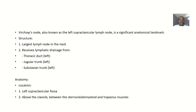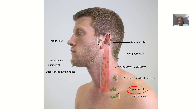Specifically, the left supraclavicular node is what we call the Virchow's node. It is specifically the left one — you can see this is the left side. So the left supraclavicular node is what we call the Virchow's node.